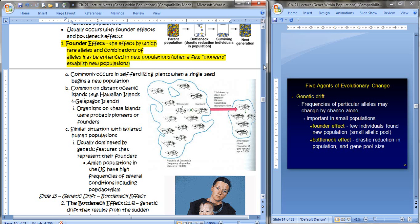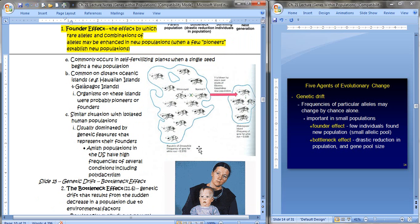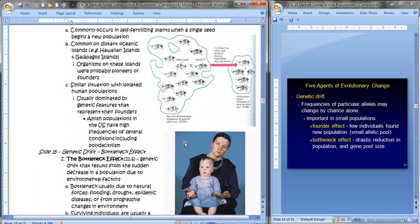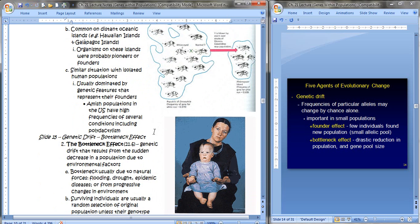This occurs commonly in self-fertilizing plants when a single seed begins a new population. We also see it, it's common on distant oceanic islands like Hawaii or the Galapagos. The organisms on these islands were probably pioneers or founders. And this example is kind of interesting where if in a population of Drosophila there are very few white-eyed males and he mates, one of these mates with a black-eyed female, and the female is blown by a storm over to another island, then you see a higher proportion of white-eyed than we did in the previous population.